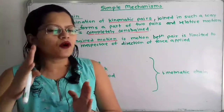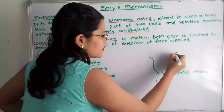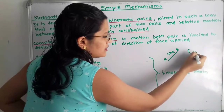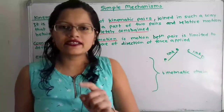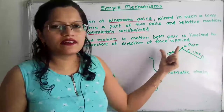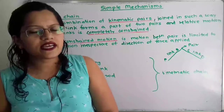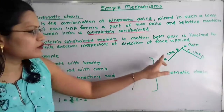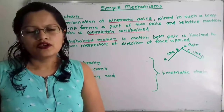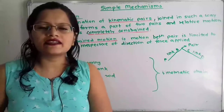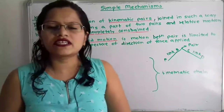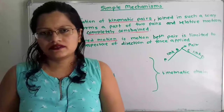From this definition, we first need to understand what is a link and what is a pair. I will draw link AB and link CD. These are two links. If these two links are connected at one point, then that point of connection is known as a pair. Now for the kinematic chain, there are particular conditions applied related to links and pairs. A pair is called a kinematic pair when the motion between the pairs is completely constrained or successfully constrained.